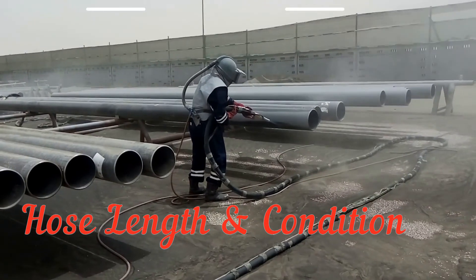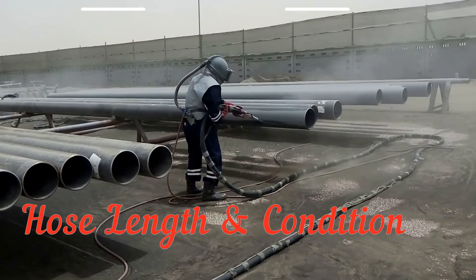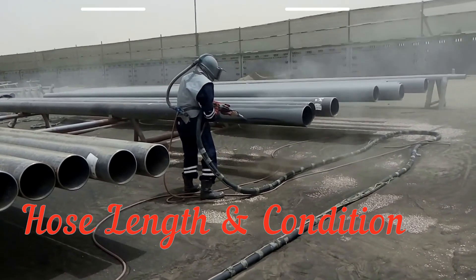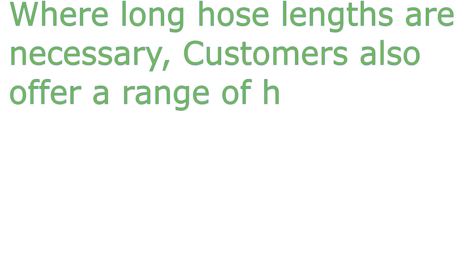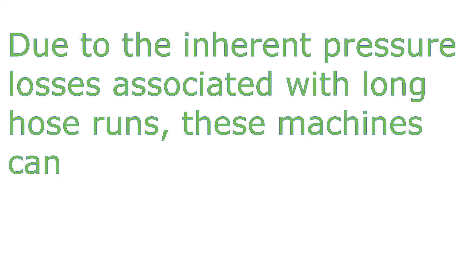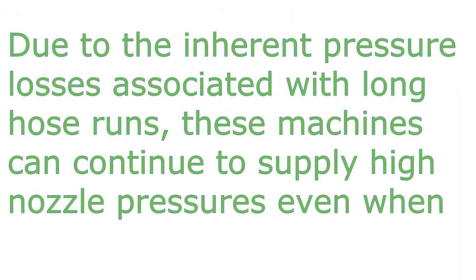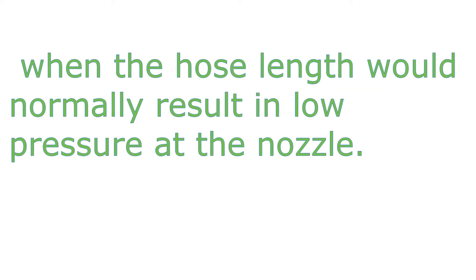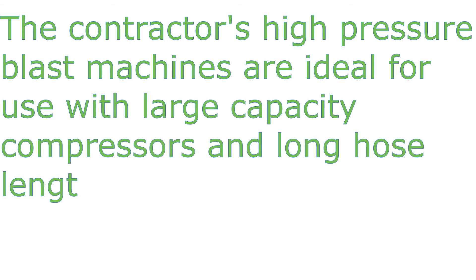Where long hose lengths are necessary, contractors also offer a range of high pressure abrasive blast machines with a maximum working pressure of 225 PSI. Due to the inherent pressure losses associated with long hose runs, these machines can continue to supply high nozzle pressure even when hose length would normally result in low pressure at the nozzle. These high pressure blast machines are ideal for use with high capacity compressors in applications such as those found on construction sites and in shipyards.